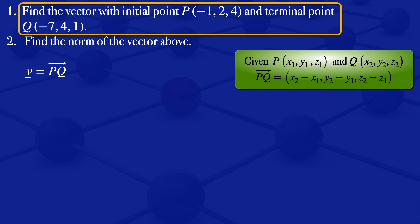In this case, our terminal point is Q and our initial point is P, so we subtract the components of P from Q. When you do that, we have -7 minus -1, 4 minus 2, 1 minus 4.